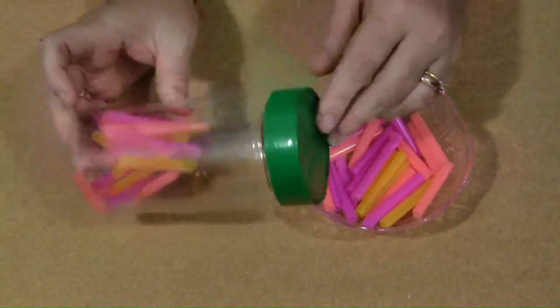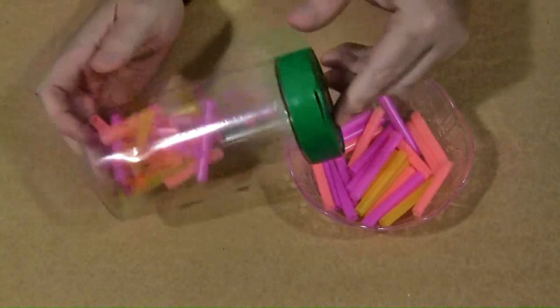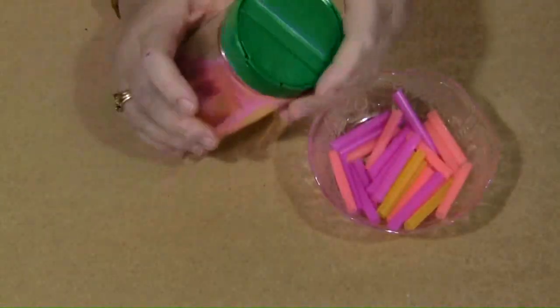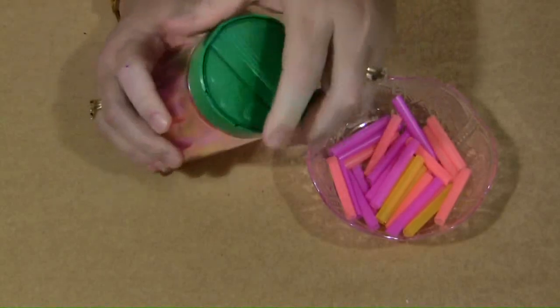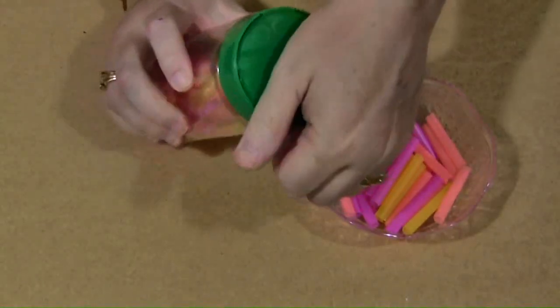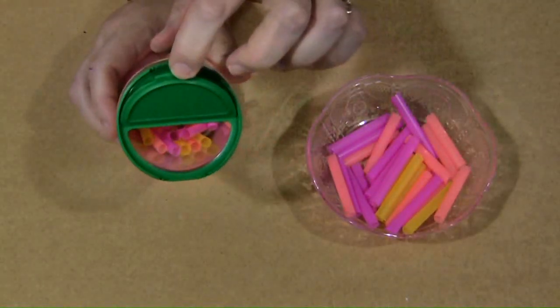You also need to have an empty, clean, dry Parmesan cheese container. And they usually come with three holes on one side, that's the shaker side, and then they have the side where if you were to spoon it out or just pour it out.